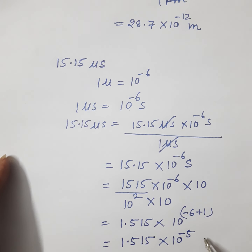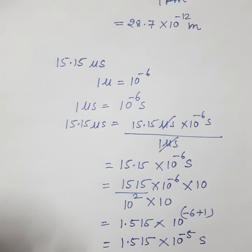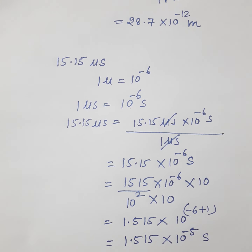So 15.15 microseconds is now converted into seconds. The answer is 1.515 × 10⁻⁵ seconds. This is a very easy and important method to understand.